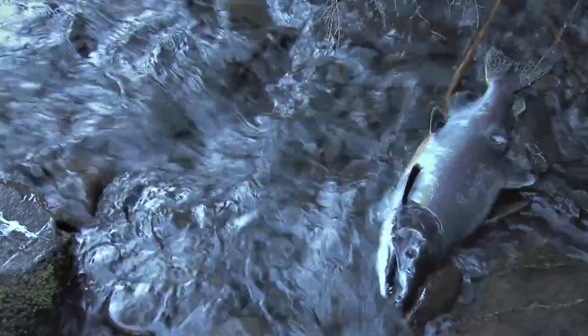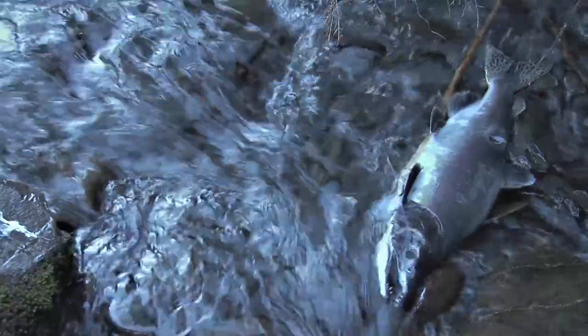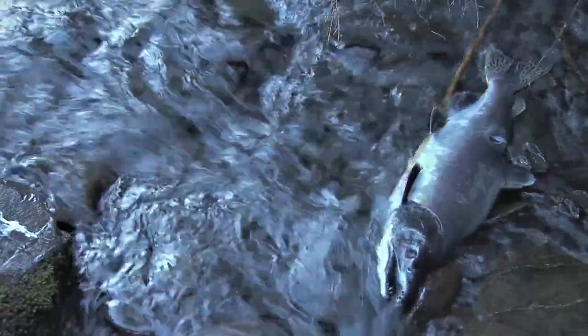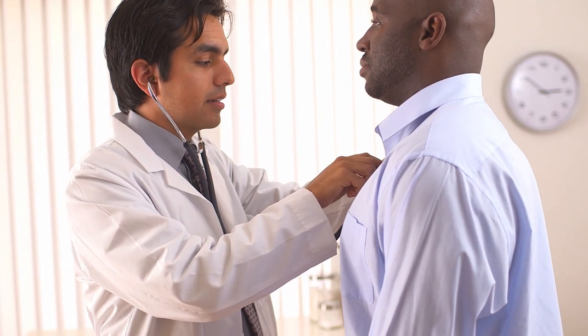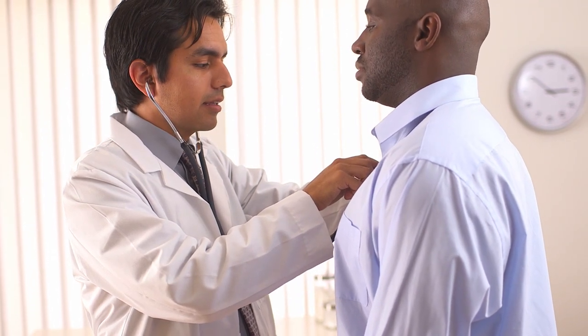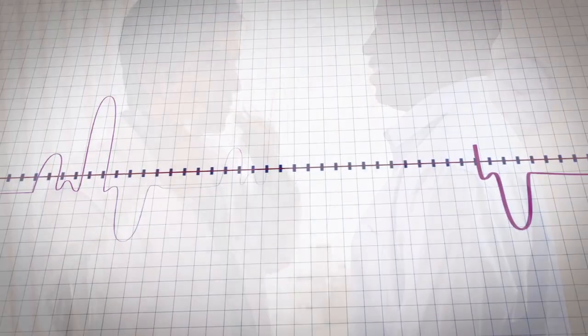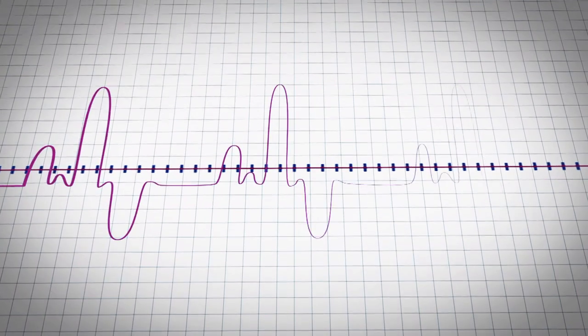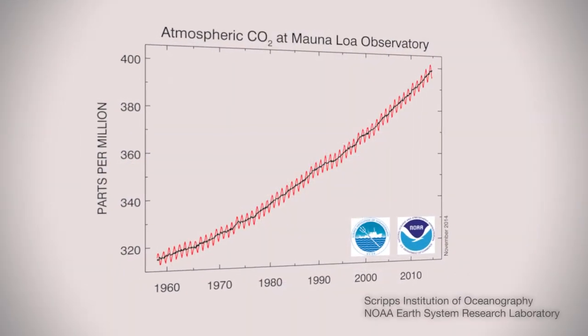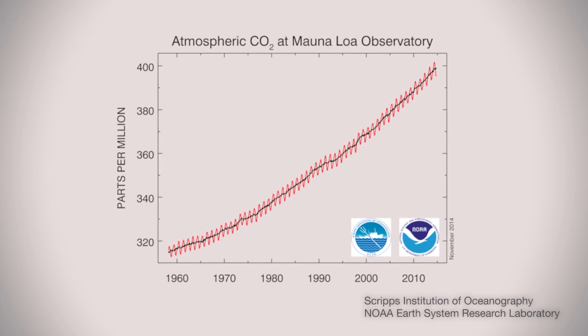We often do not fully appreciate ecosystem services until humans have degraded them and we see the result. In order to understand human impacts on the natural world, environmental scientists attempt to evaluate the status of ecosystem services. One way to do this is to use environmental indicators to evaluate the health of the natural environment. Just as a physician might take your temperature, heart rate, or respiration rate as an indicator of the health of your body, environmental scientists use measures such as carbon dioxide concentration in the atmosphere as an indicator of the health of the natural environment.